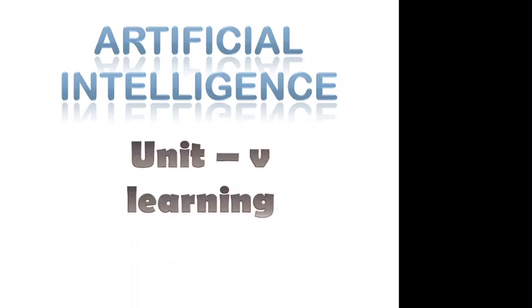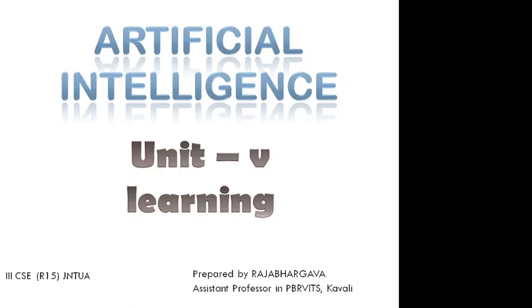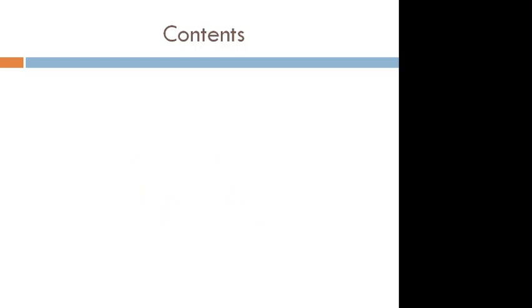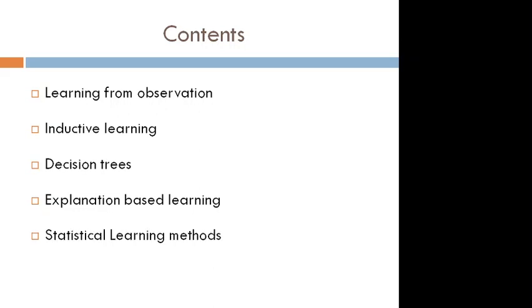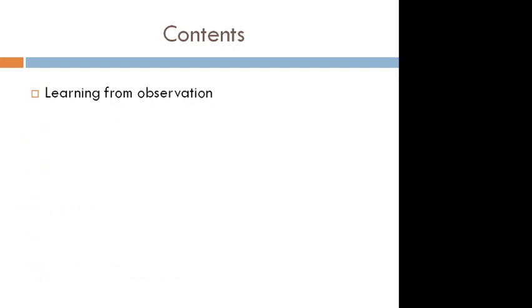Good morning students, welcome to Artificial Intelligence class. Today we are starting Unit 5 learning. According to the curriculum, the contents of Unit 5 are: first, learning from observations; we will discuss the basic concepts of learning; next, inductive learning, decision trees, explanation-based learning, statistical learning methods, and reinforcement learning. Total six topics are there.